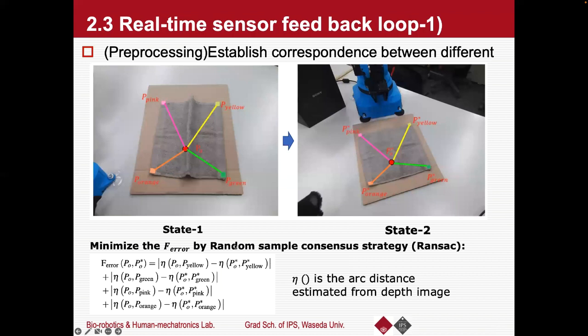In the real-time sensor feedback loop, it is necessary to establish the correspondence between different states. Here, we use random sample consensus based on an error we designed to find the approximate corresponding point between different states. And this method's time consumption is quite low and able to support real-time application.